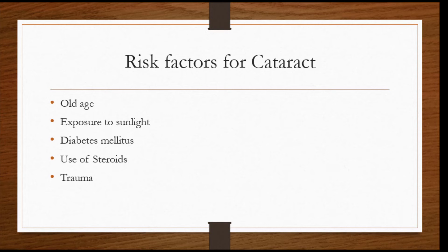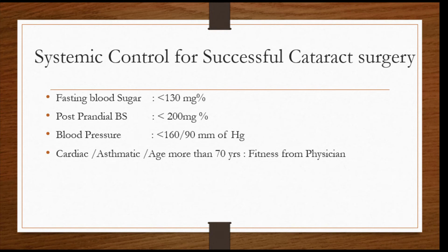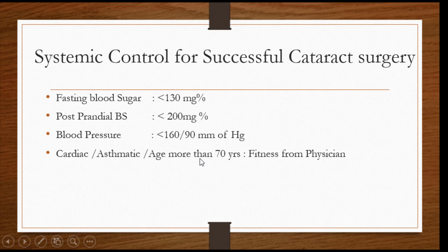Risk factors for cataract include old age, exposure to sunlight, diabetes, use of steroids, diseases like renal disease or asthma, rheumatoid arthritis, and we now commonly see young ladies who undergo IVF presenting with early cataracts — and definitely trauma. When preparing a patient for cataract surgery, we ensure fasting blood sugar is less than 130 mg% and postprandial blood sugar less than 200 mg%. Blood pressure should ideally be less than 160/90, and if the patient is cardiac, asthmatic, or over 70 years, we ask them to get physician fitness.